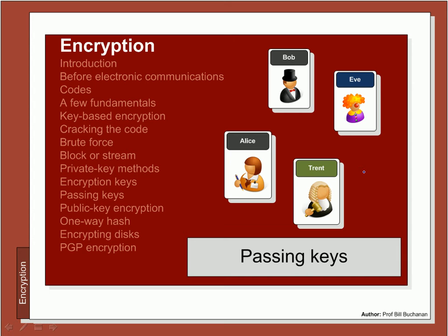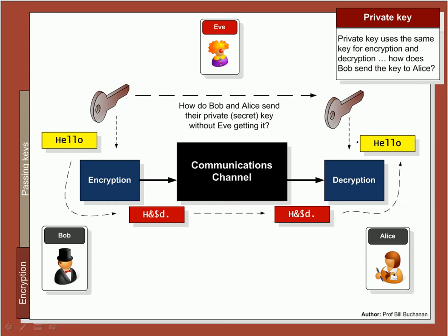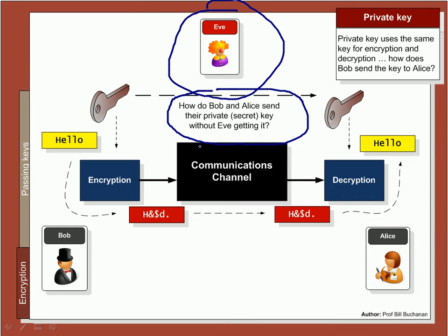The major problem we have is how Bob and Alice send their secret key without Eve finding out. The dilemma is: how do they send their keys without Eve listening?